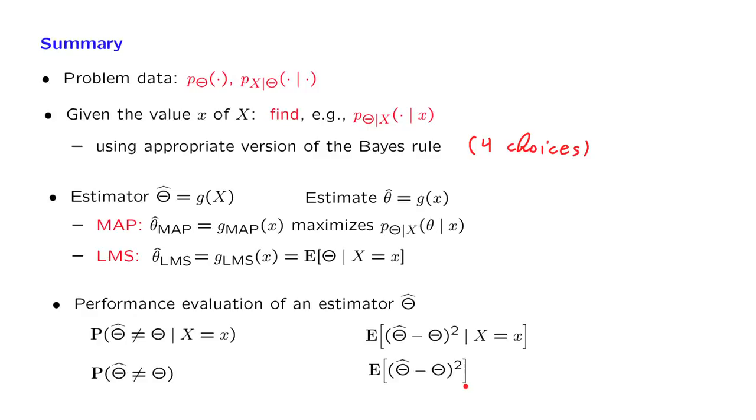How do we calculate these performance measures? Here we live in a conditional universe, and in a Bayesian estimation problem, at some point, we do calculate the posterior distribution of theta given the measurements.